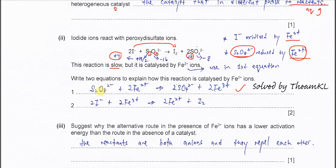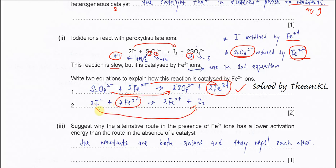So the first equation: peroxidisulfate reacts with iron(II); iron(II) is oxidized and peroxidisulfate is reduced. The iron(III) formed is then used to oxidize iodide to iodine. Iodide is oxidized to iodine, iron(III) is reduced to iron(II), and this iron(II) is used back in the first equation to react with peroxidisulfate. Therefore iron(II) is the catalyst — it can be regenerated.